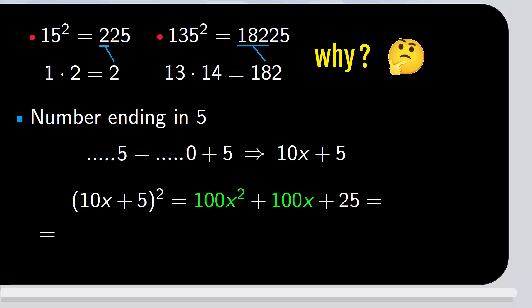We can take out a common factor of 100x, which multiplies x plus 1, plus 25. And we write this as x times x plus 1, times 100, plus 25.